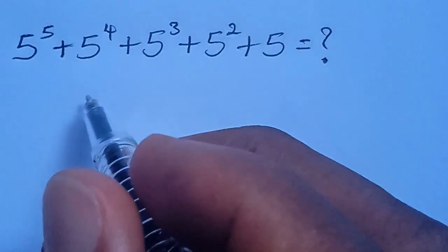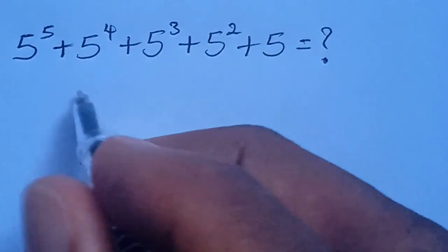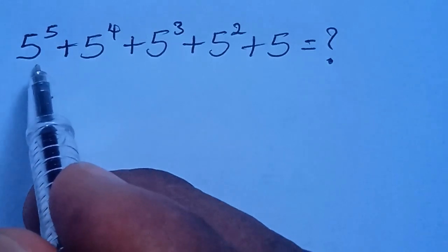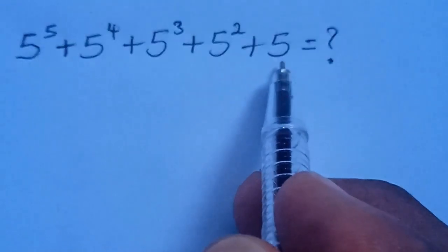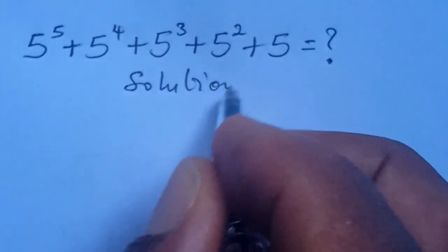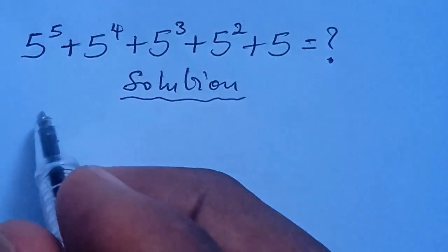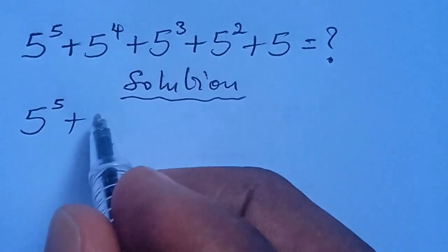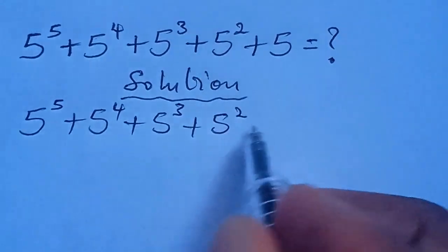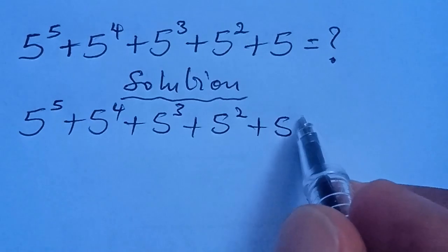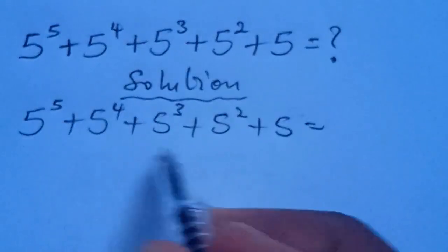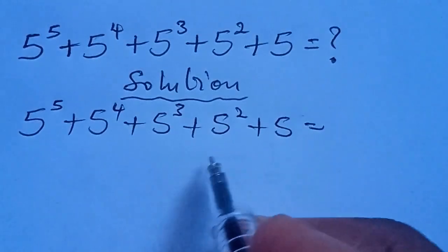Hi everyone, welcome to another interesting lesson. In today's lesson we want to simplify this exponential expression: 5 to the power of 5, plus 5 to the power of 4, plus 5 to the power of 3, plus 5 to the power of 2, plus 5 to the power of 1. How do we simplify this? What is the value of this expression?